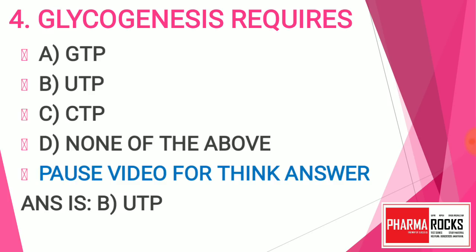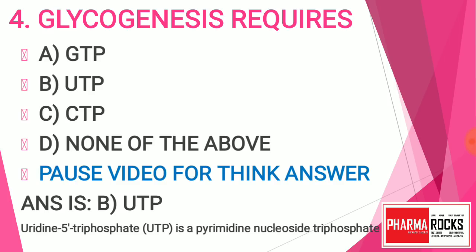The answer is B — UTP. UTP is uridine 5-triphosphate, a pyrimidine nucleotide triphosphate. Glycogenesis requires UTP.